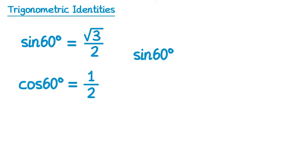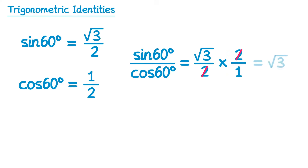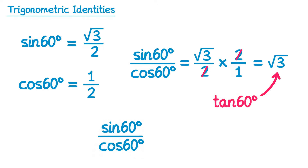Now if we divide sine of 60 by cos of 60, we do square root 3 over 2, divide by one half. To divide by a fraction you multiply by its reciprocal, and the 2's cancel, so we get square root 3. That's the tan of 60. So we've shown that sine of 60 divided by cos of 60 is equal to tan of 60.